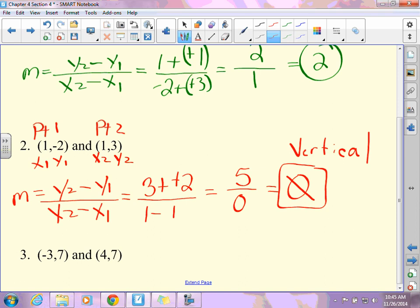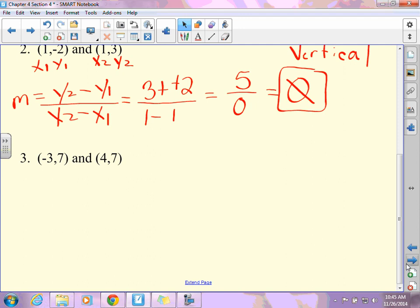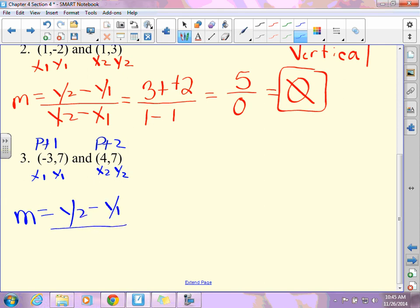Let's do the third one. 0.1, 0.2, x1, y1, x2, y2. M equals y2 minus y1 over x2 minus x1. And then, like I said, it's foolproof. If you write it down the way that I asked you, it's super easy. So I got 7 minus 7 over 4 minus a negative 3.